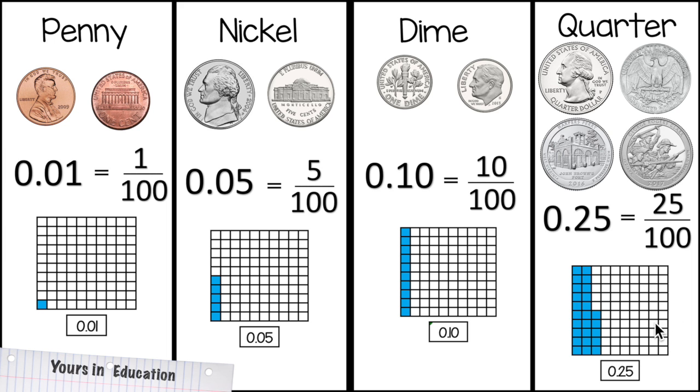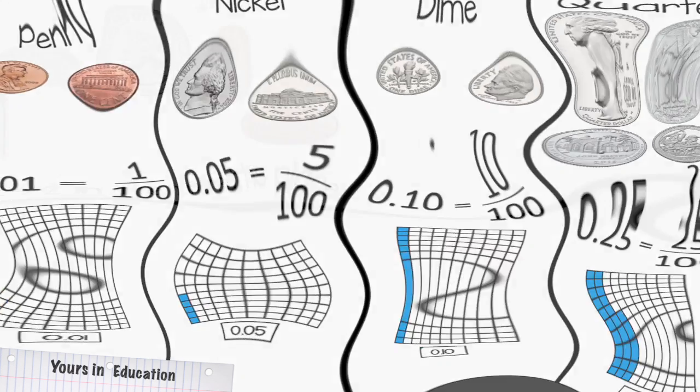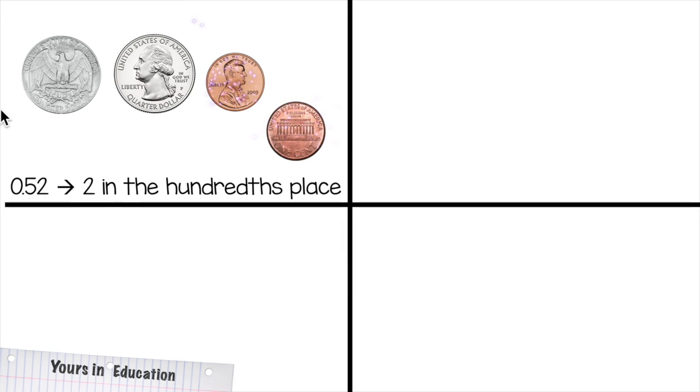Remember, I'm gonna say this one last more time, if you had the whole thing shaded, that would be one dollar. Now we're gonna build numbers with the digit 2 in different places. We're gonna start with the digit 2 in the hundredths place.